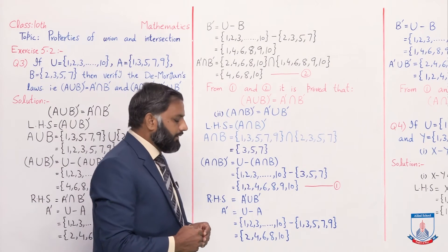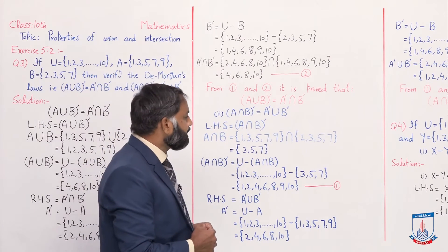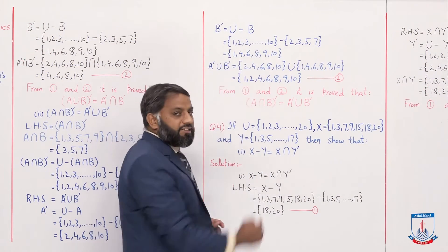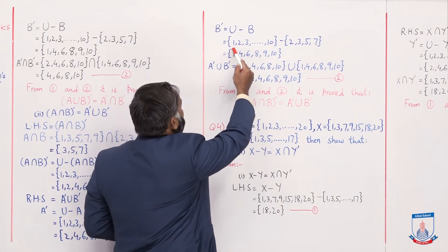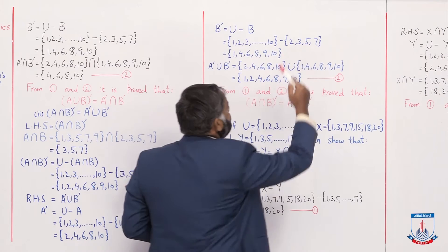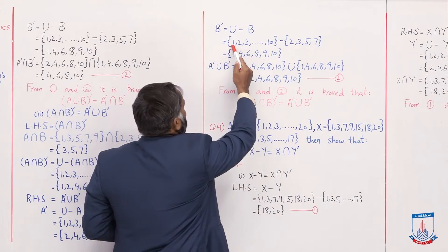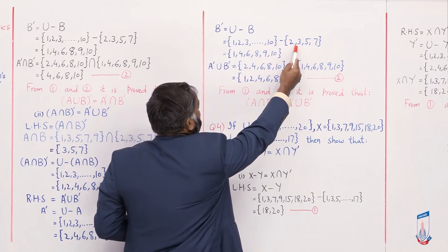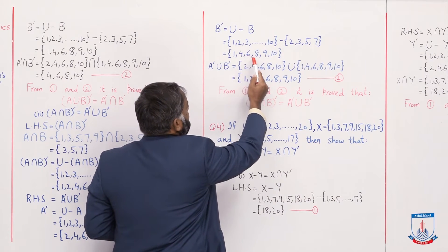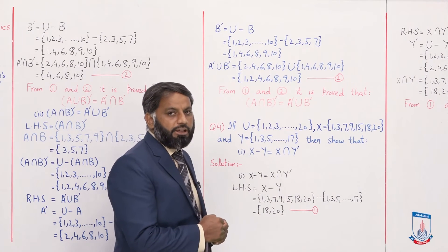Now we find B' on the next board. B' = U minus B. Universal set is {1, 2, ..., 10} minus set B = {2, 3, 5, 7}. The elements not in set B are: one is there; two, three won't come as they are present there; four, five won't come; six, eight, nine and ten. So B' = {1, 4, 6, 8, 9, 10}.